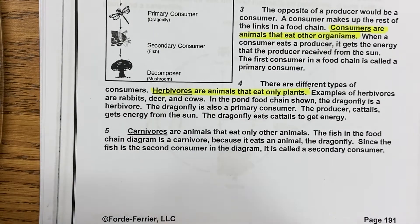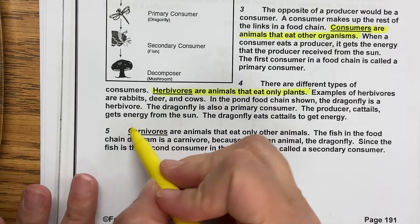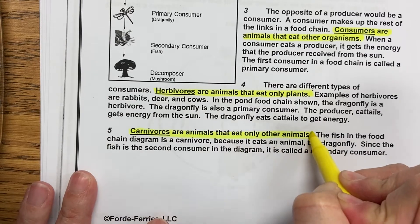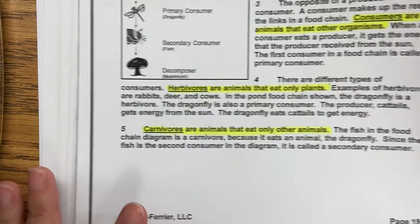Paragraph five: Carnivores are animals that eat only other animals. The fish in the food chain diagram is a carnivore because it eats an animal, the dragonfly. Since the fish is the second consumer in the diagram, it is called a secondary consumer. So we have: carnivores are animals that eat only other animals. We're going to go to the next page.